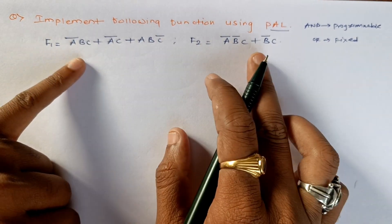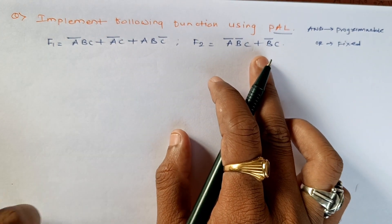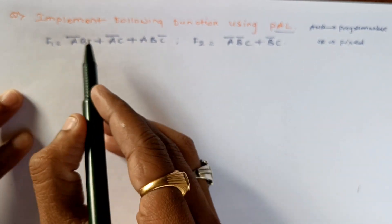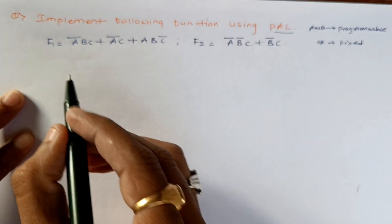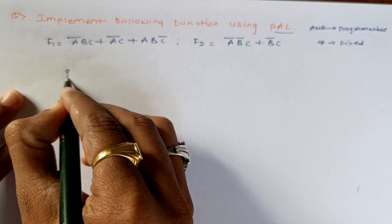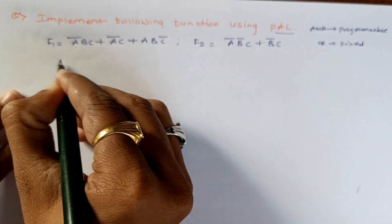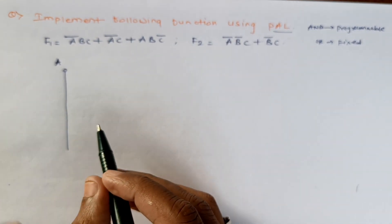So let's take, I will be taking the first variable as A. Now if you look at these F1 and F2 functions, we need A bar also, so we will make a provision for A bar with a NOT gate.